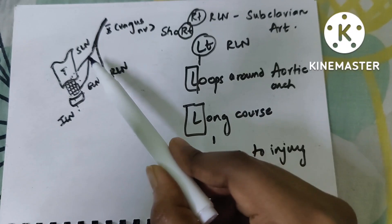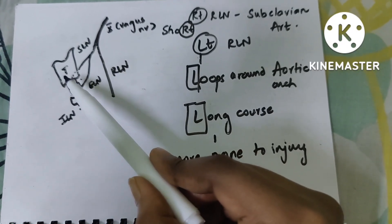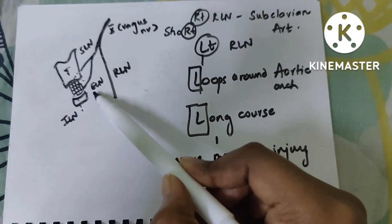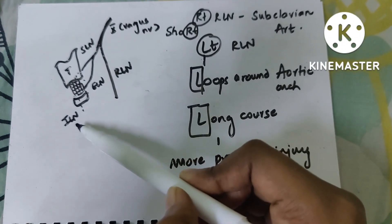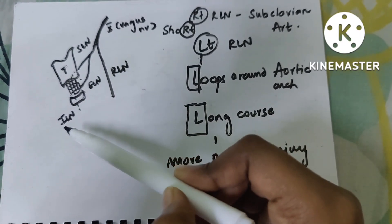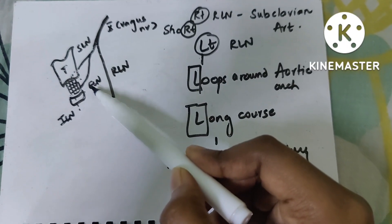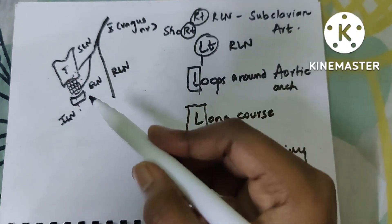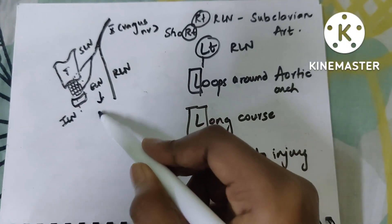The superior laryngeal nerve is again divided into the internal laryngeal nerve and the external laryngeal nerve. The internal laryngeal nerve supplies the interior of the larynx — that is, sensory supply — whereas the external laryngeal nerve supplies a muscle called the cricothyroid muscle.